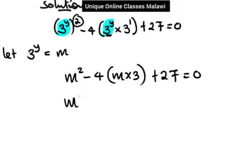I'm going to have m here square. Removing the bracket, negative 4 times 3, we get negative 12m. So 3m times negative 4 is equal to negative 12m plus 27 equals 0.